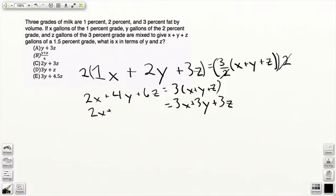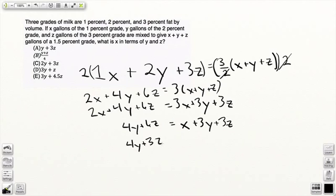So 2x plus 4y plus 6z. I'm going to move the 2 over here. So I'm going to get x plus 3y plus 3z equals 4y plus 6z. I'm going to move the z over here. That's going to be 4y plus 3z equals x plus 3y. Now I'm going to move the y over here. So y plus 3z equals x. And lo and behold...